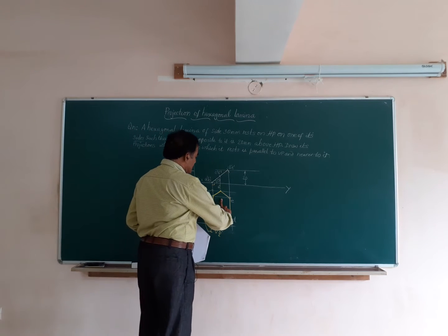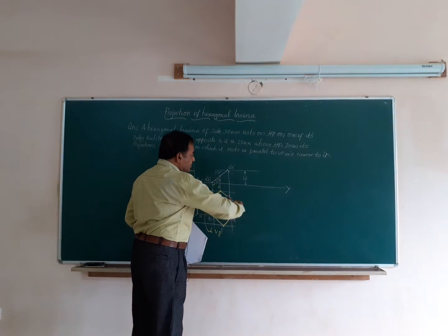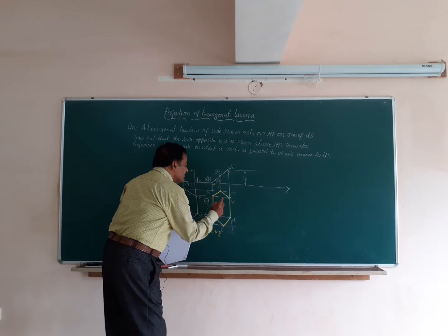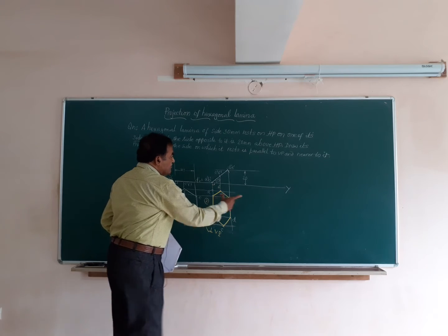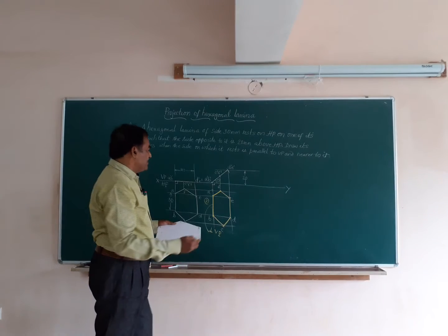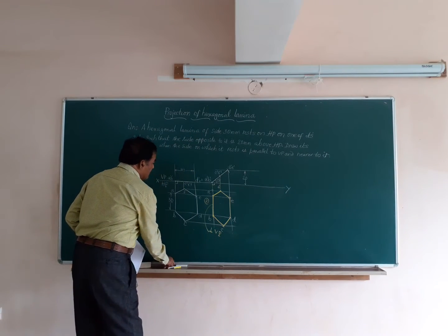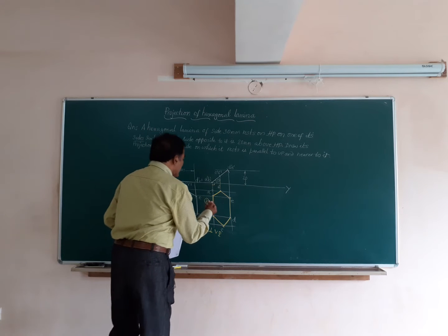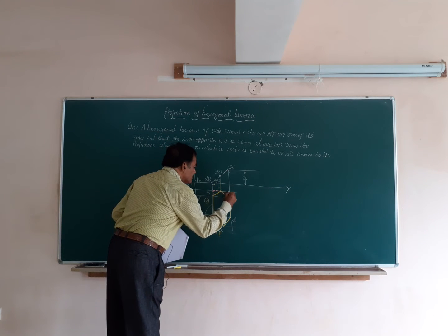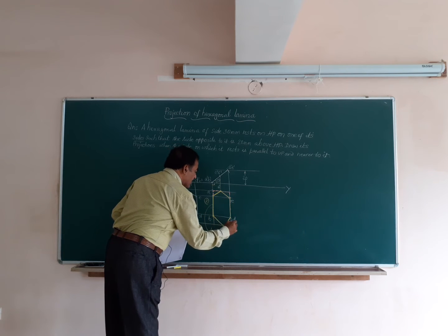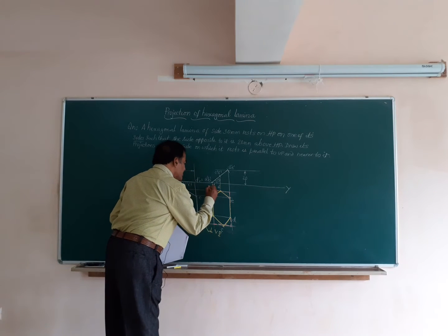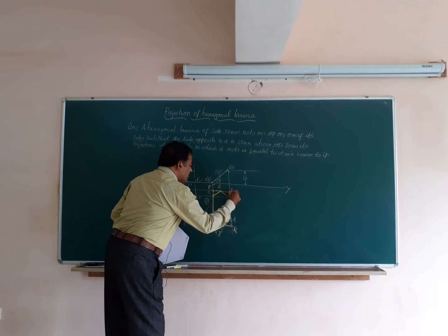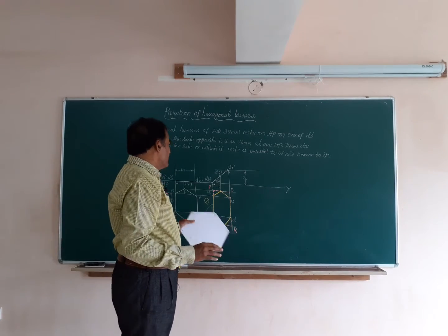I have to redraw this top view such that it is rotated 90 degrees, so that side AB becomes parallel to VP. To construct this, enclose the hexagon figure in a box and name that box PQRS — P, Q, R, and S. I have enclosed the hexagon in box PQRS.